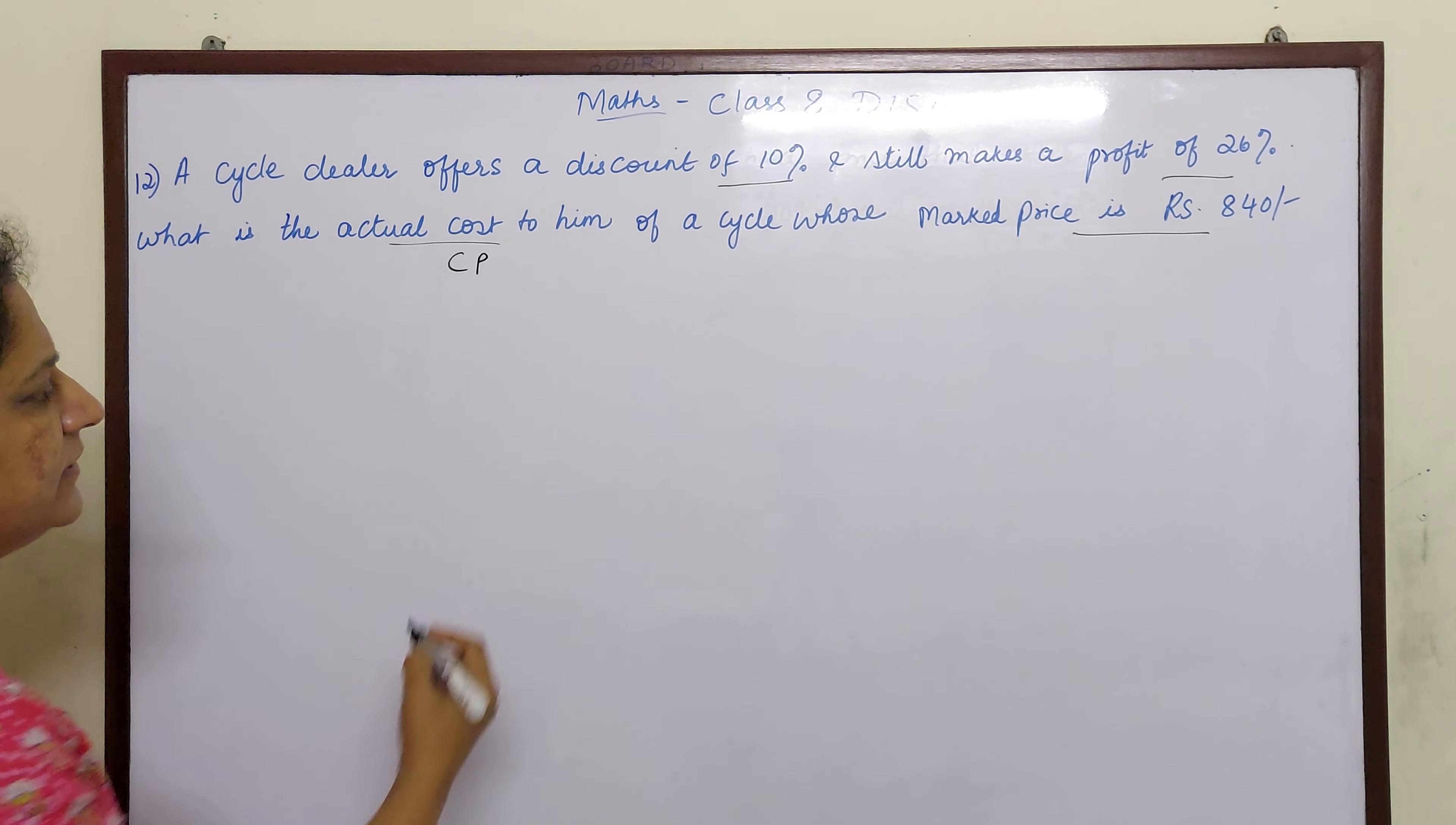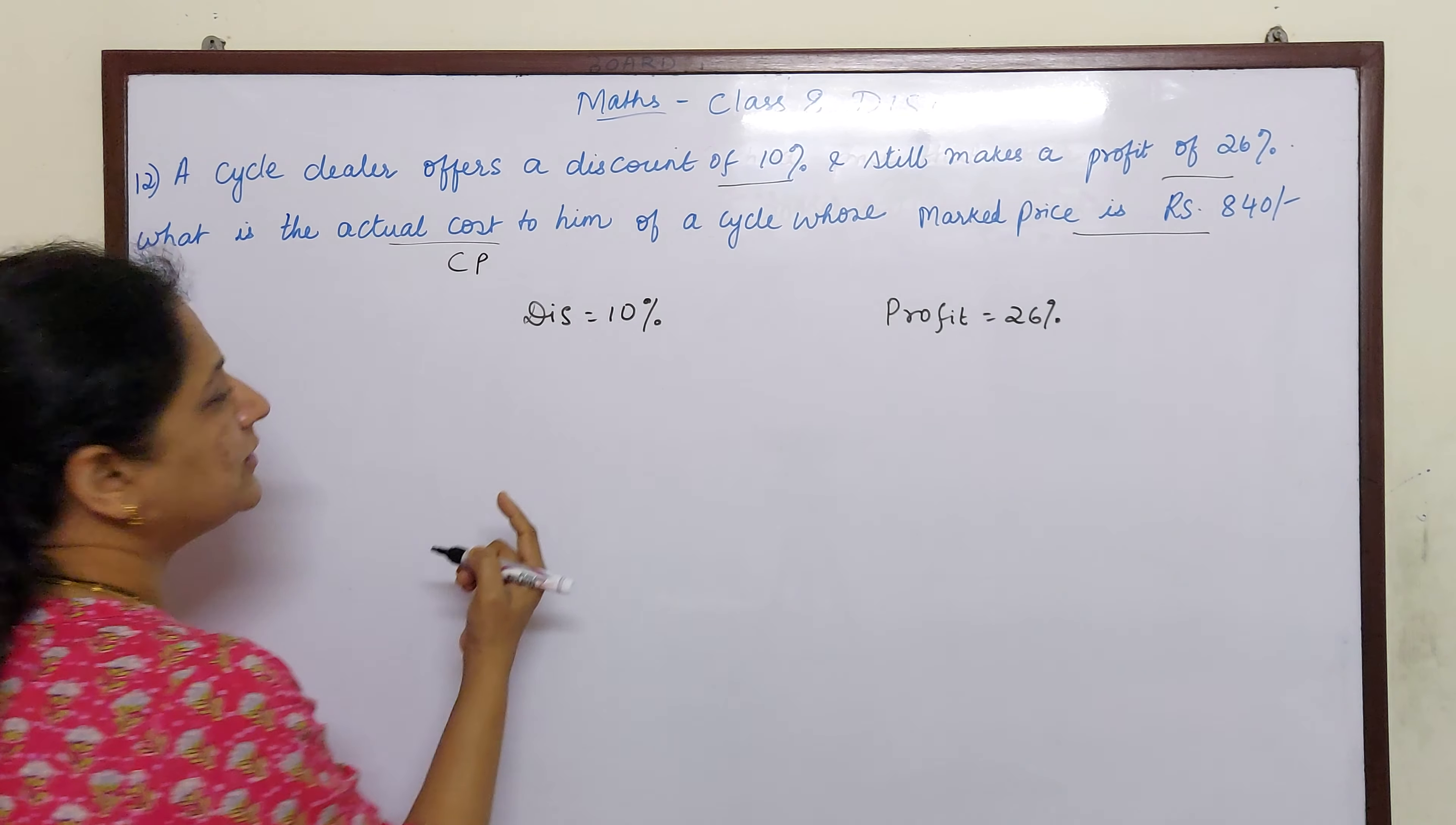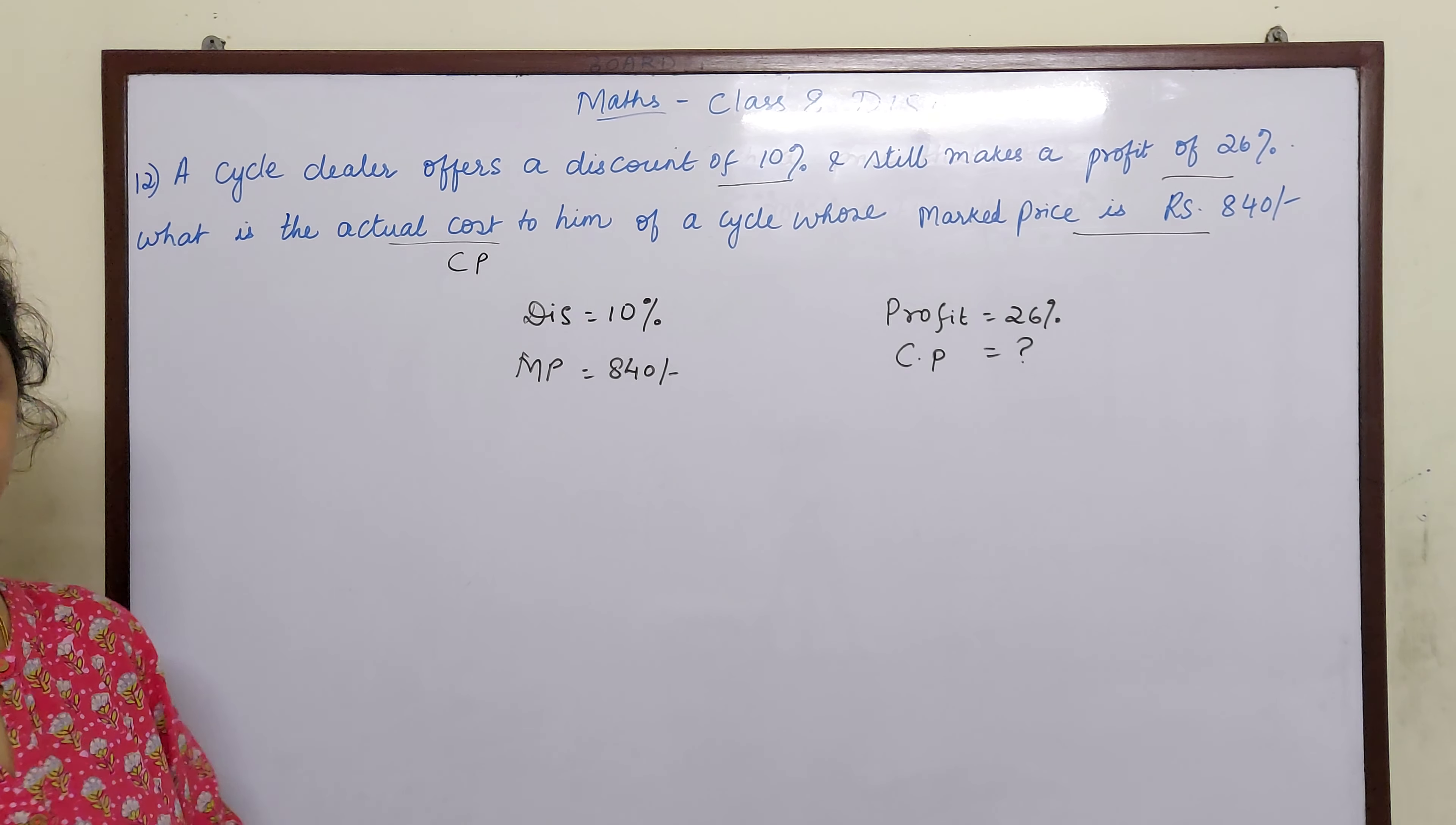Now here children, the information given is: discount is 10%, profit is 26%, and marked price is 840. Cost price is what we need to find. So with the help of this given information we have to find cost price.